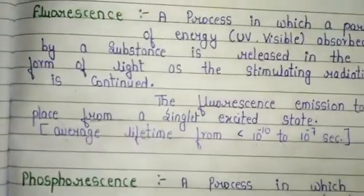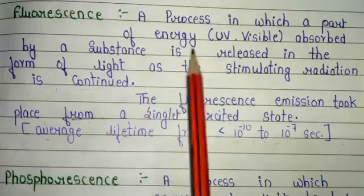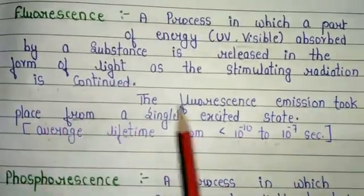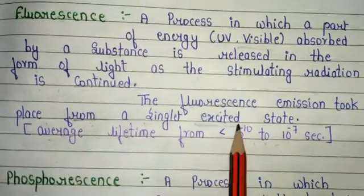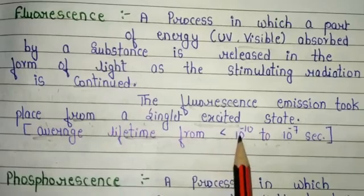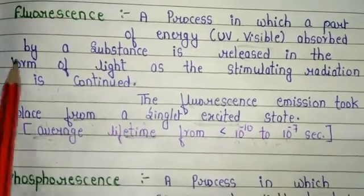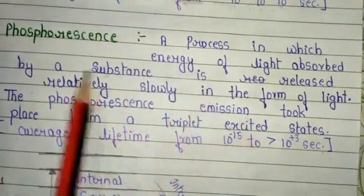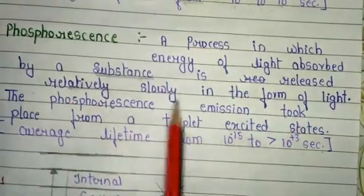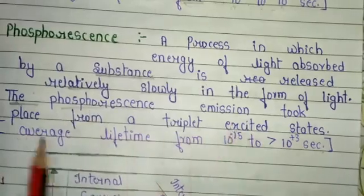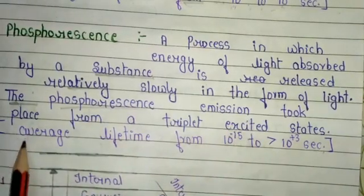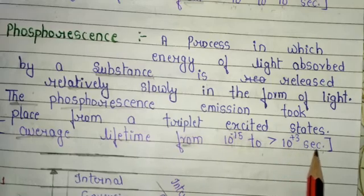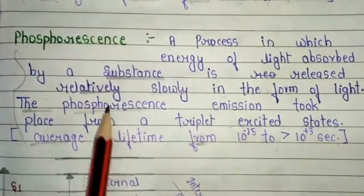The basic definition of fluorescence is: a process in which a part of ultraviolet or visible energy absorbed by a substance is released in the form of light as the stimulating radiation is continued. Fluorescence emission takes place from a singlet excited state, with an average lifetime from less than 10 to the power minus 10 to 10 to the power minus 7 seconds. The basic definition of phosphorescence is: a process in which energy of light absorbed by a substance is released relatively slowly in the form of light. Phosphorescence emission takes place from a triplet excited state, with an average lifetime from 10 to the power minus 15 to more than 10 to the power plus 3 seconds.